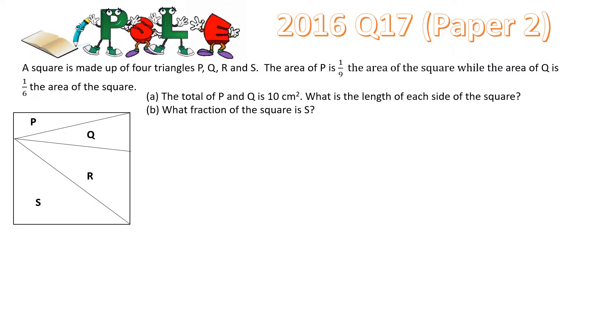A square is made up of four triangles P, Q, R and S. The area of P is 1/9 the area of the square while the area of Q is 1/6 the area of the square.